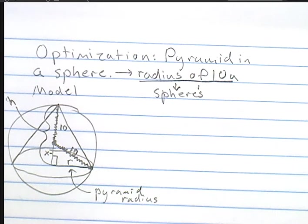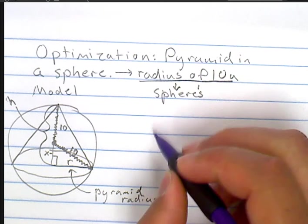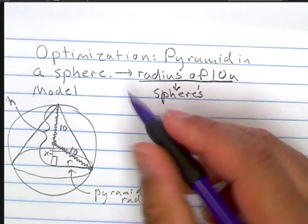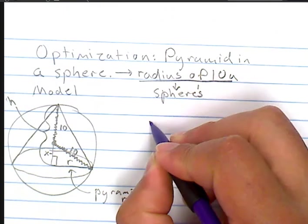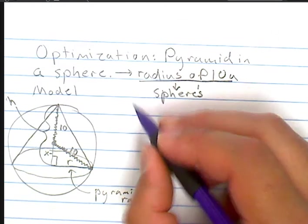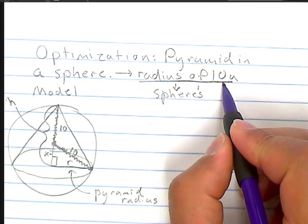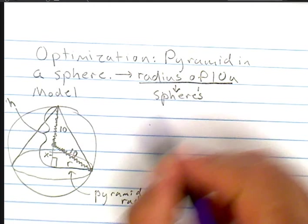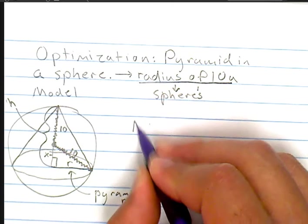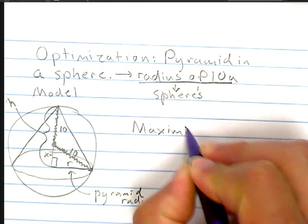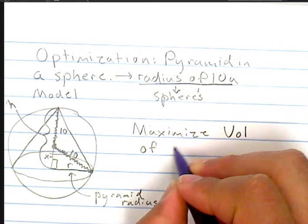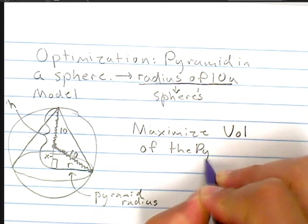So we have this portion right here that's X. What we want to do is we're trying to maximize the volume of the pyramid. We have a radius of 10 units on the sphere, and here's our model for the pyramid that's inscribed in the sphere.